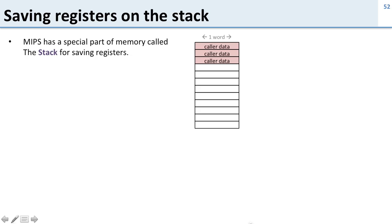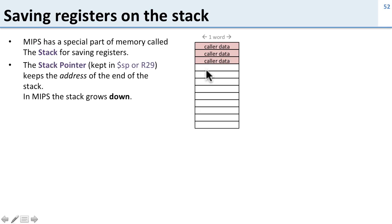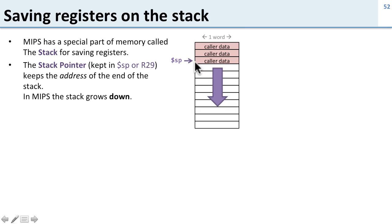So how do we save registers? In MIPS, we have a special part of memory called the stack for saving registers. Here's our memory — you can see we've got some data saved in here. We have a special register called the stack pointer, or register 29, which keeps track of this. The stack pointer points to the end of the stack. In MIPS, the stack grows downward, so when we put more data on the stack, we move the stack pointer down.